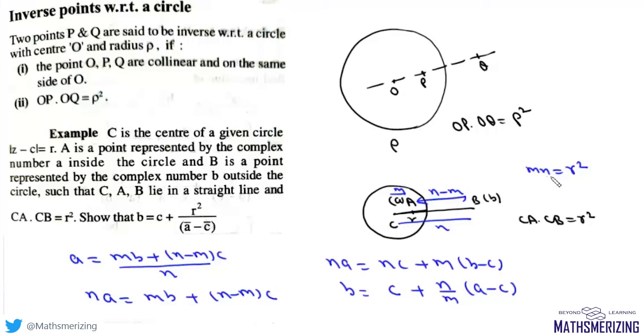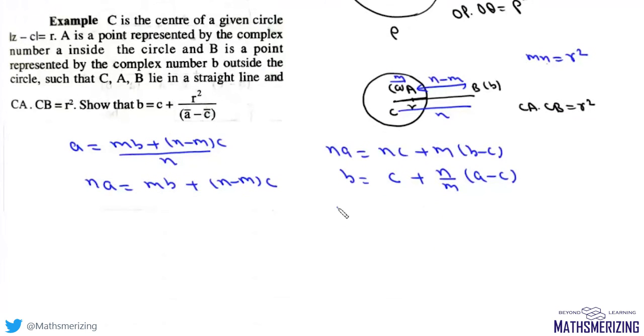Now we can write n as r²/m. So we can write this as b = c + (r²/m²) times (a - c).